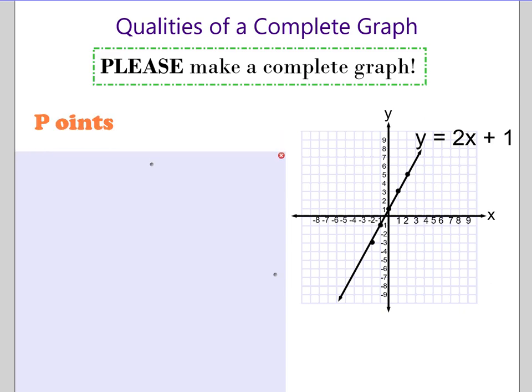The first one, we want to make sure that we have points. I have an example here of a complete graph off to the side, and you can see that I have these points plotted on my graph. The L is going to be for the labels. So the complete graph should have the X here and the Y there. It should also have labels along the axes. I'm going to talk about that a little bit more in a bit, so it's going to have labels to show what the numbers are.